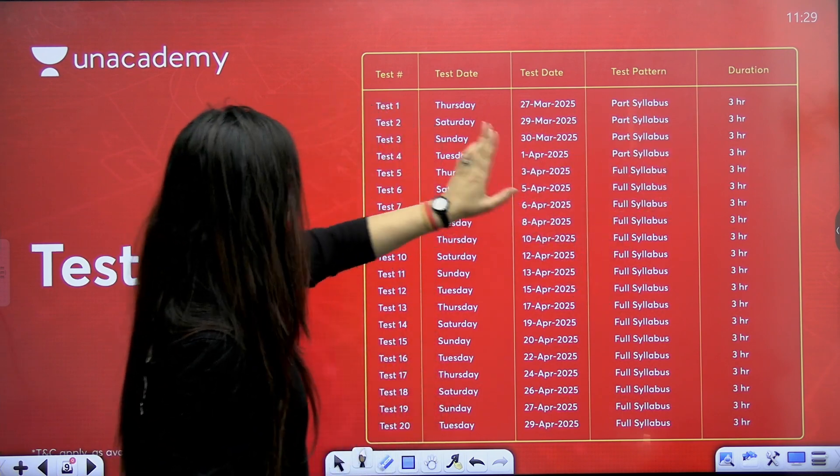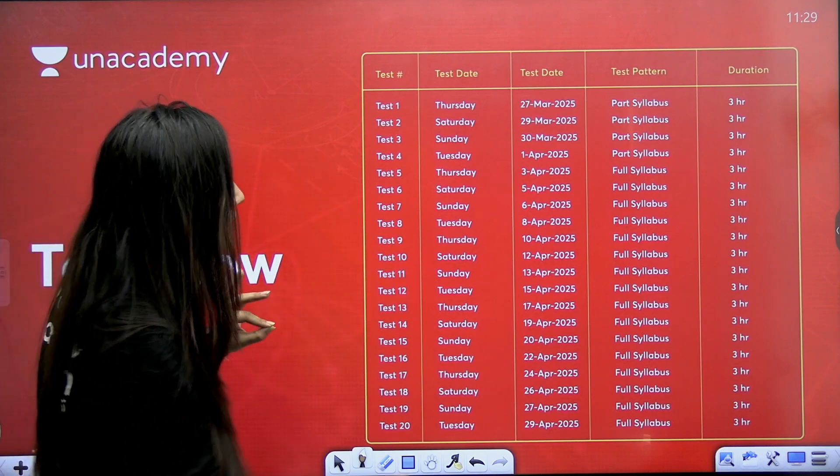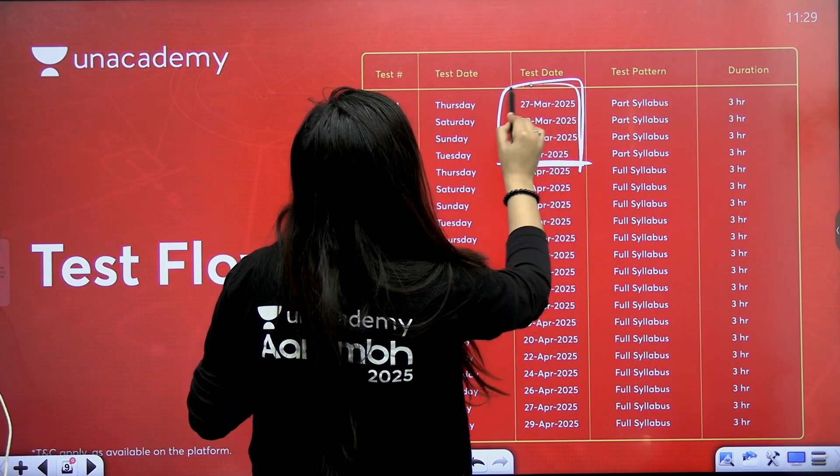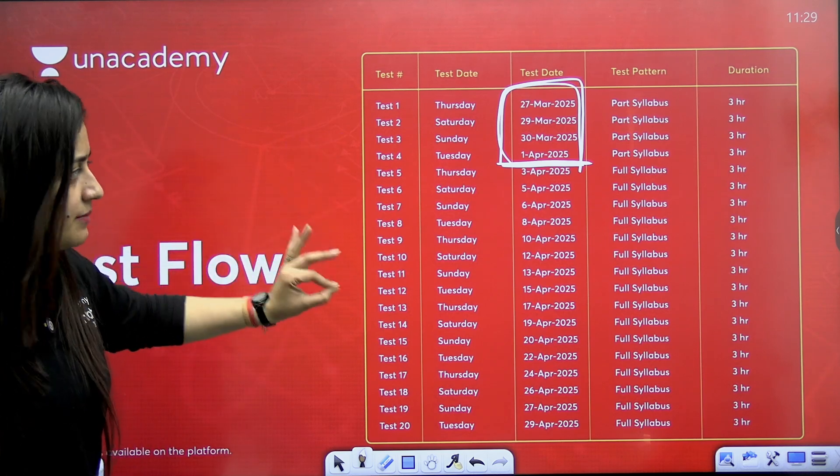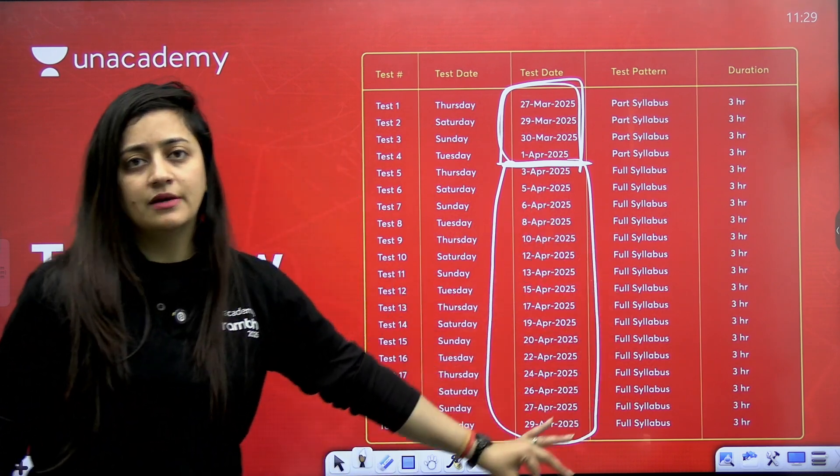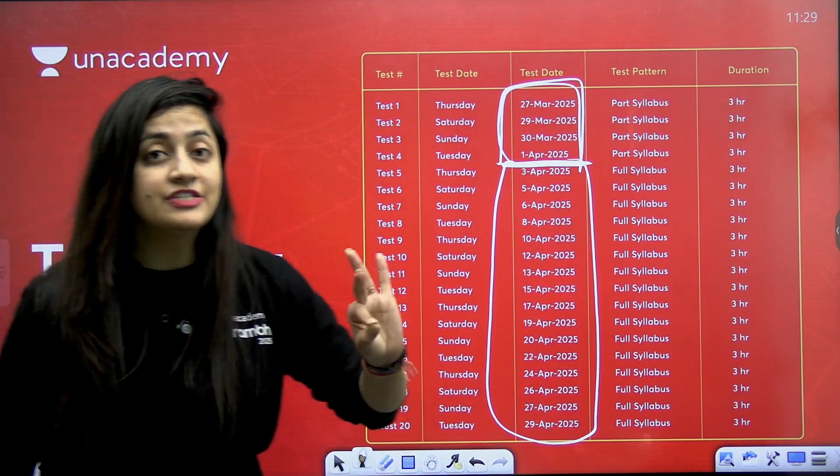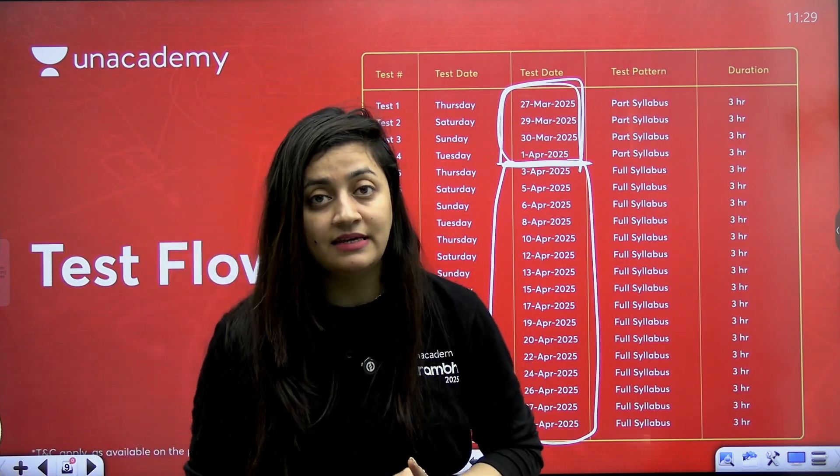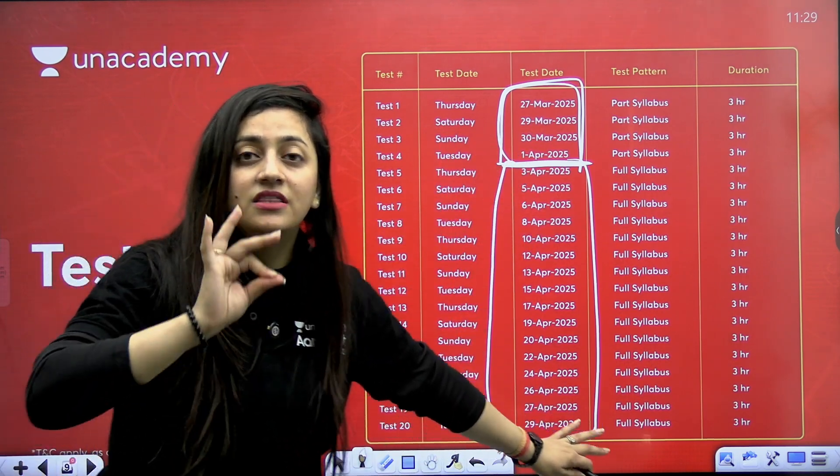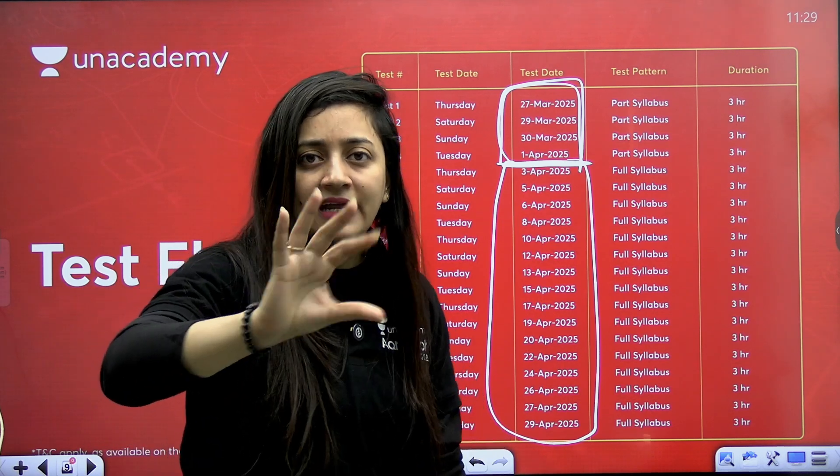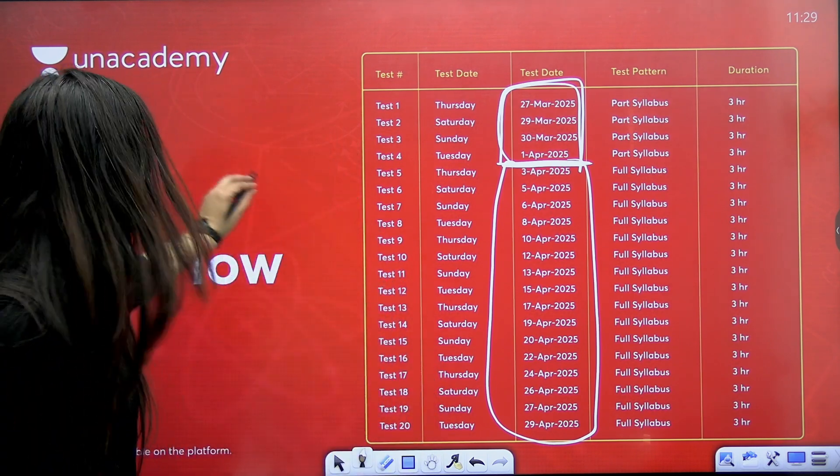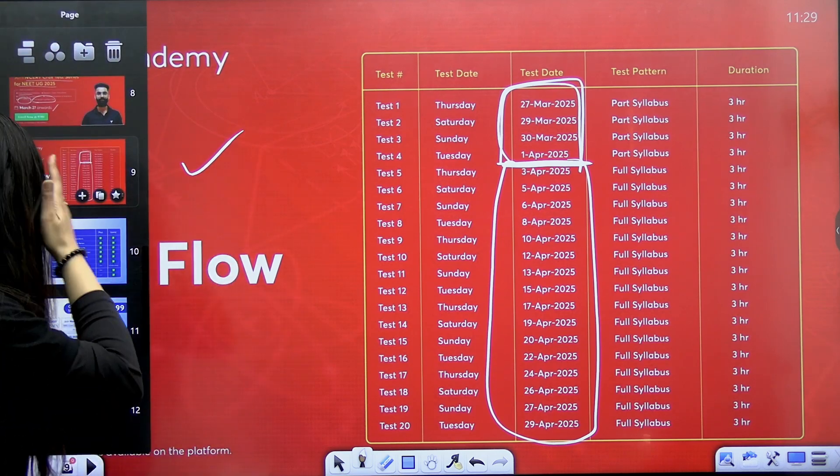Part syllabus. Syllabus will be provided to you. Up to 1st April, till 1st April you have part syllabus test. You can complete your syllabus in parts. Then from 3rd April to 29th April, full syllabus test will be there. And let me tell you my dear students, if you join this test series, if you have completed even 50% of the syllabus, you can join this test series because the questions are from NCERT. They'll give you an idea what kind of questions can come in paper. And you can just revise those questions again and again. So that is my suggestion for all of you. This is the test flow. It will be provided to you.